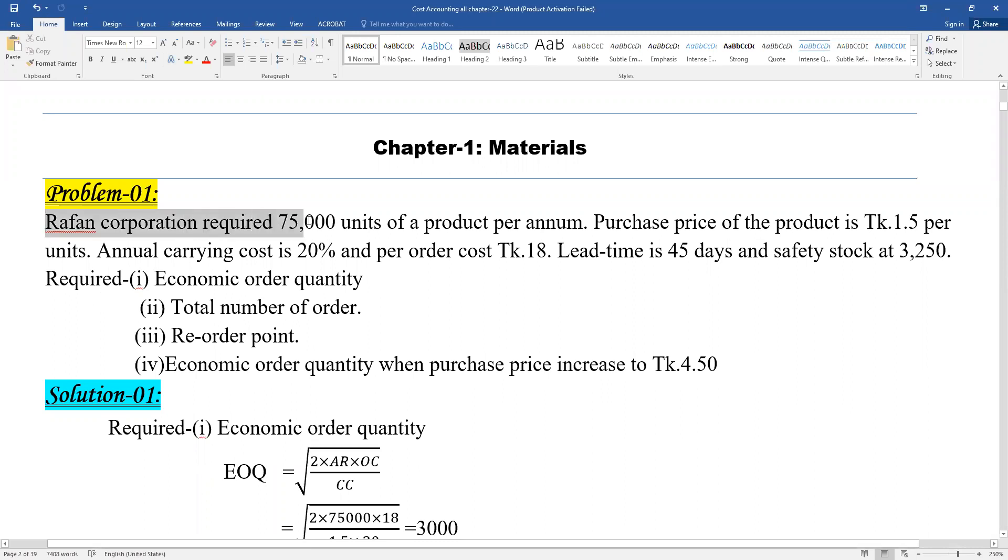Rafan corporation requires 75,000 units of a product per annum.